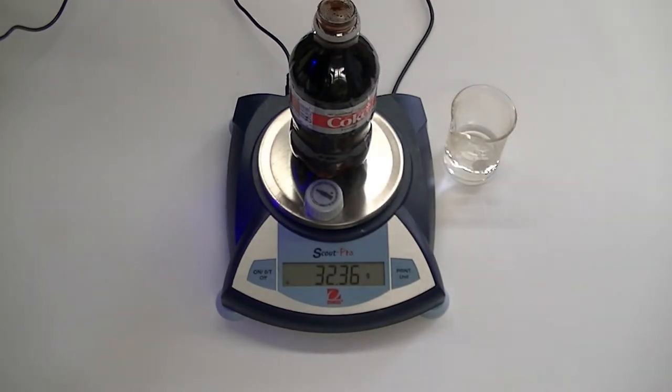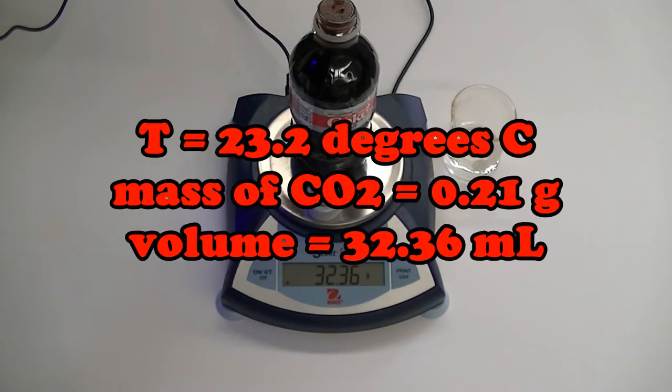Okay, because it took 32.36 grams of water, the headspace volume is 32.36 milliliters. Okay, now we've got all the information we need, so let's do some calculations.